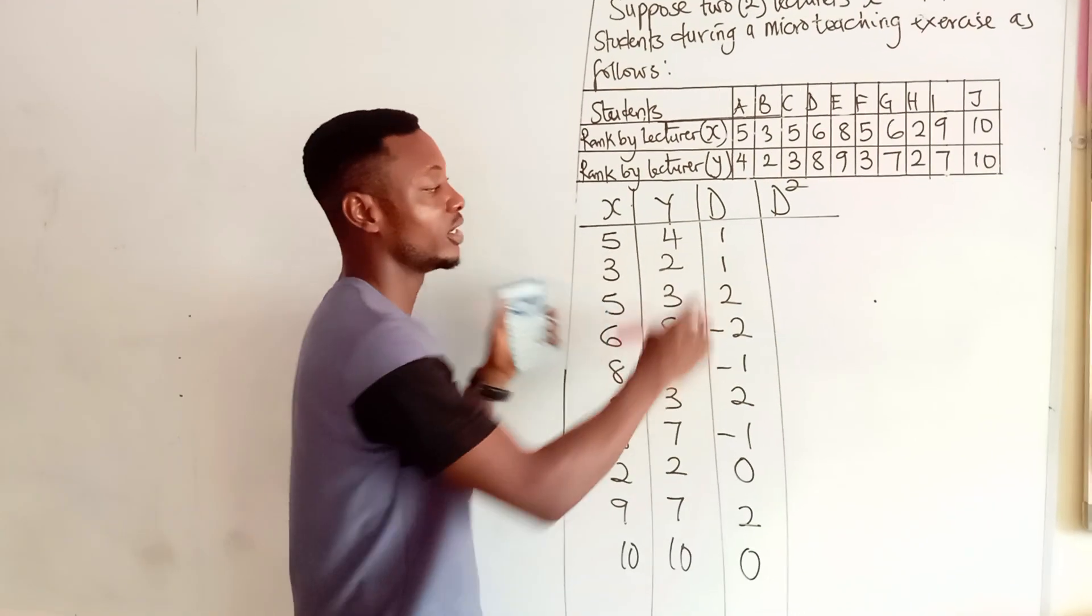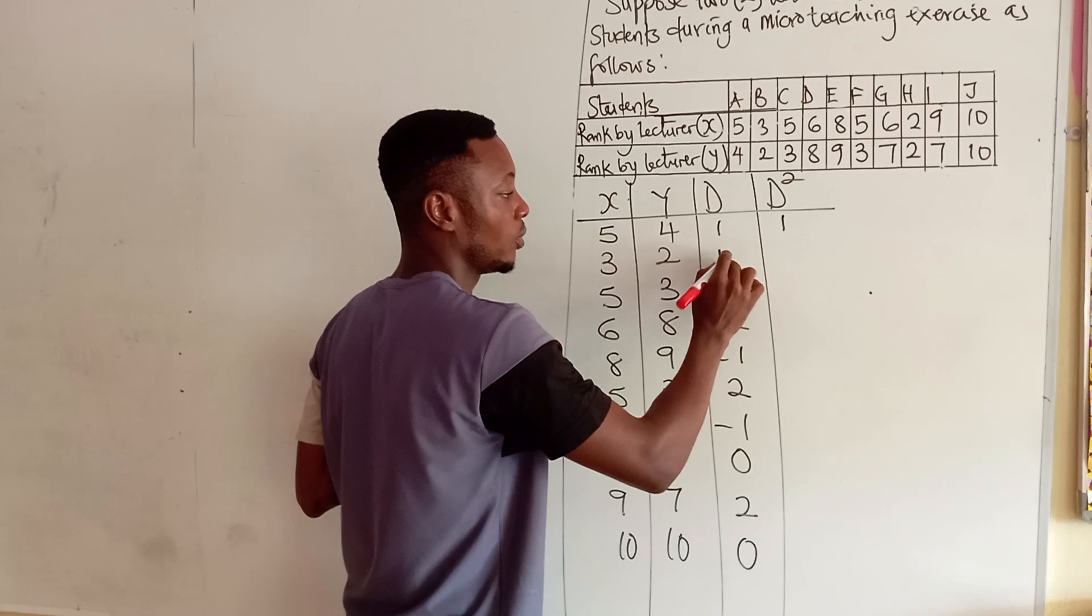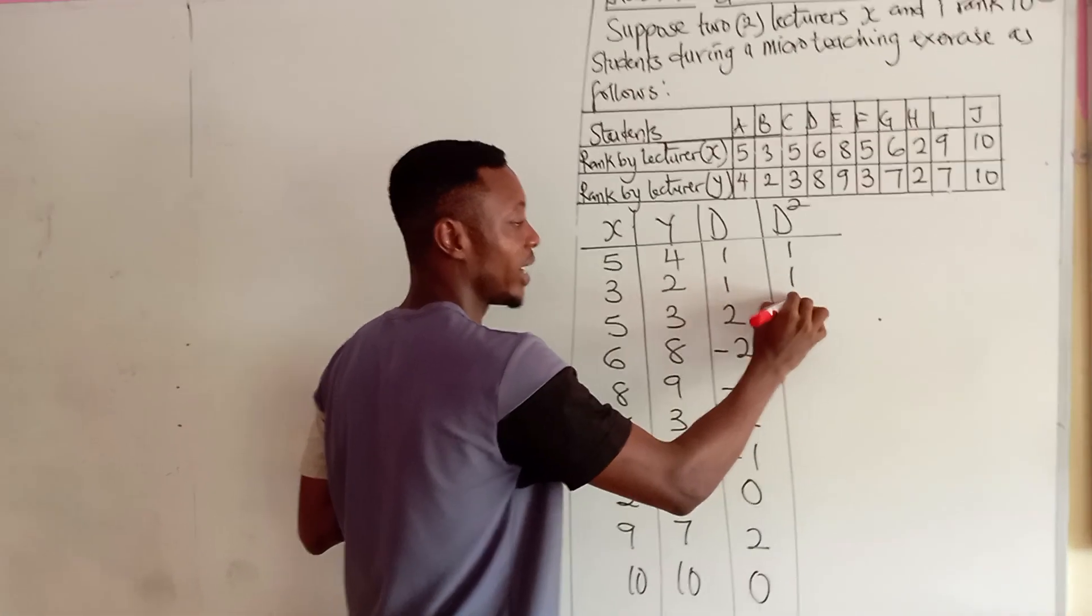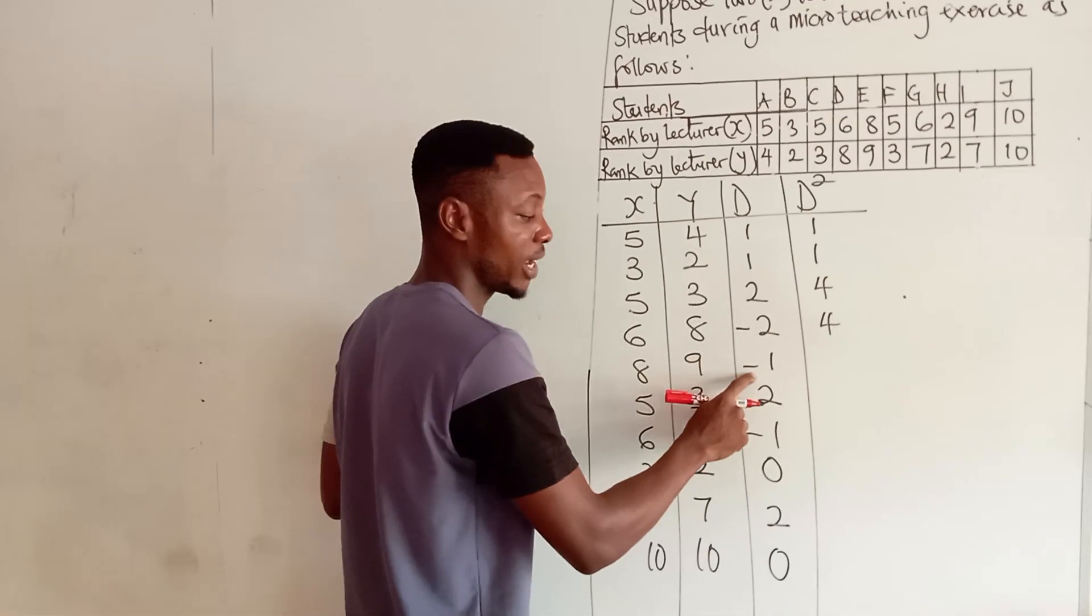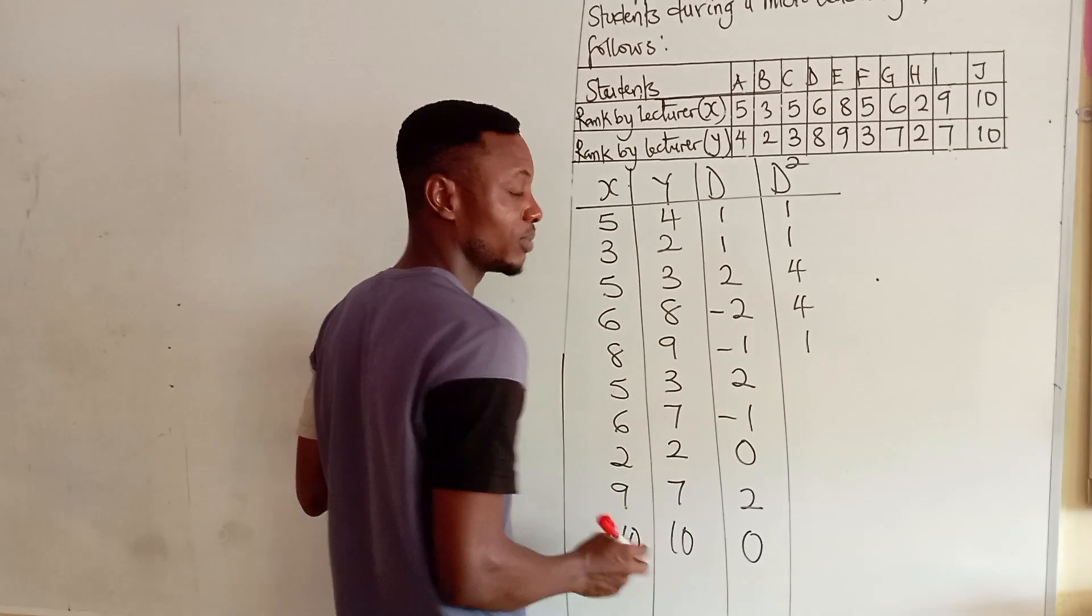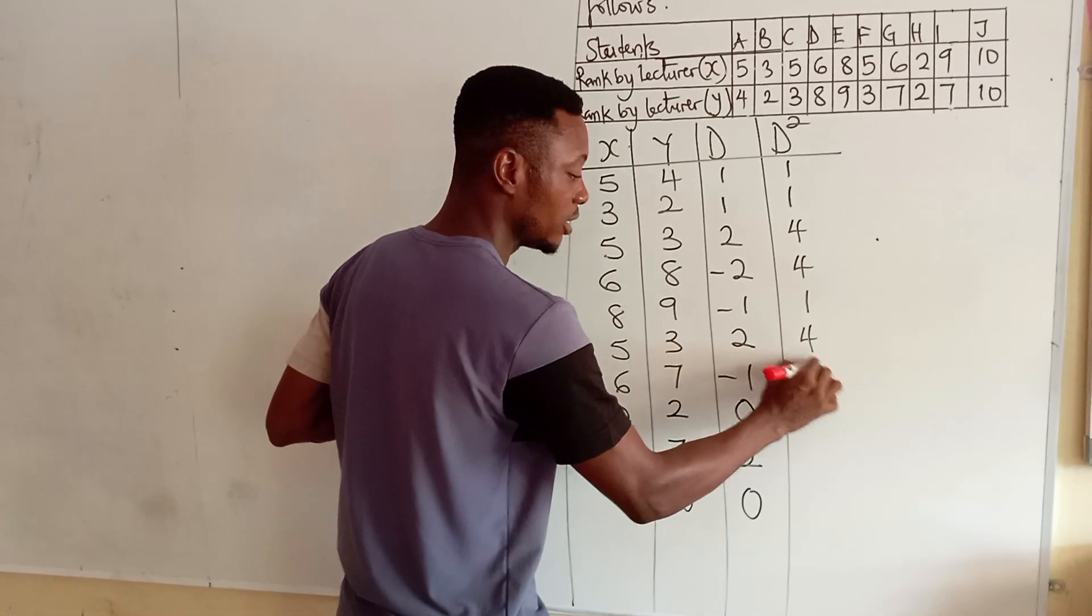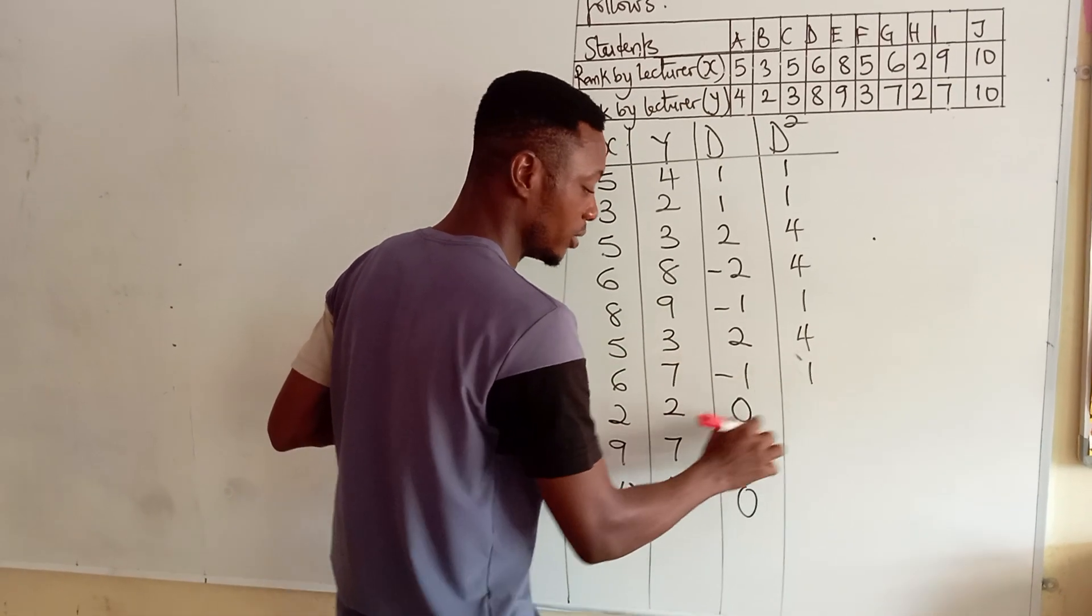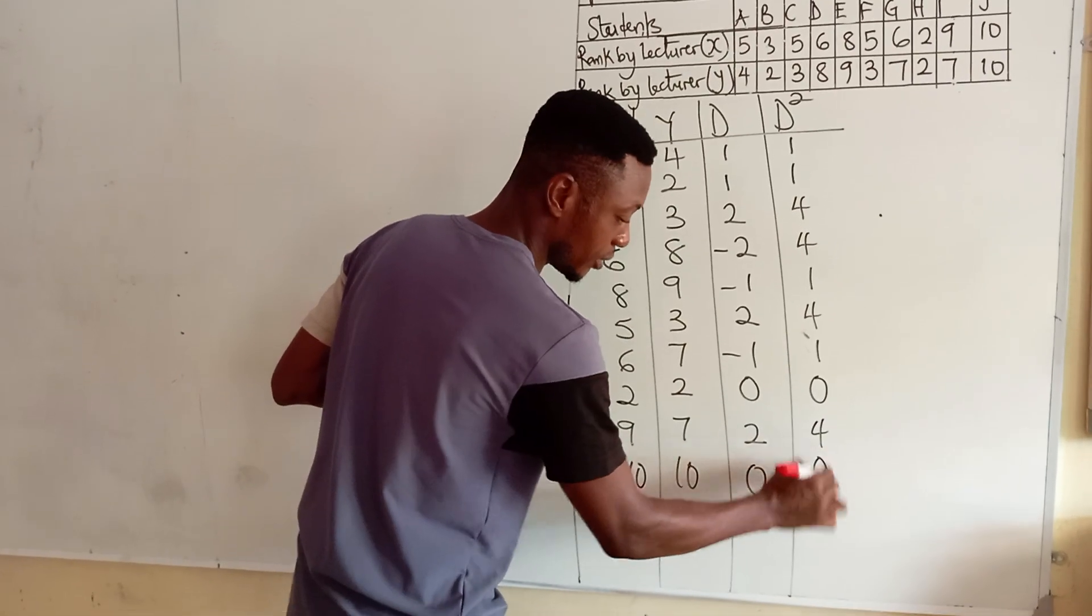D² has to do with the square of these differences, which is 1 squared is 1, 1 squared is 1, 2 squared is 4, 2 squared is 4, minus times minus is plus, so this gives me a positive number. This is 4, this is 1, 1 squared is 1, 0 is 0, 2 is 4, 0 is 0.